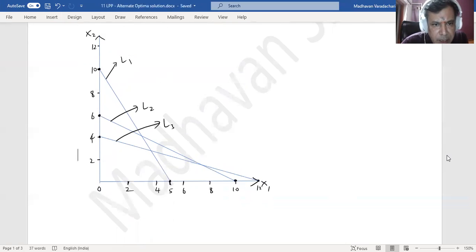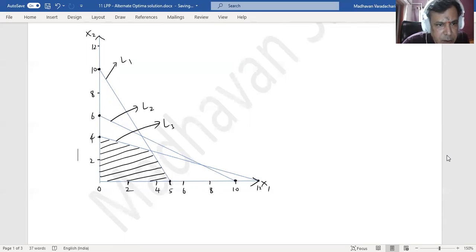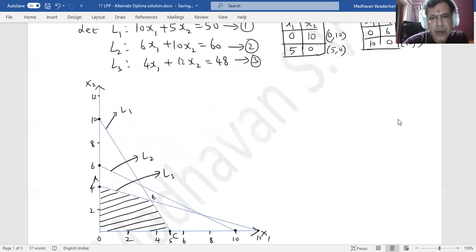Now the common region for all these lines is this shaded area. That is our common region. Let me call this as O, this as A, this as B, this as C. So I will say here O, A, B, C is the common feasible region.